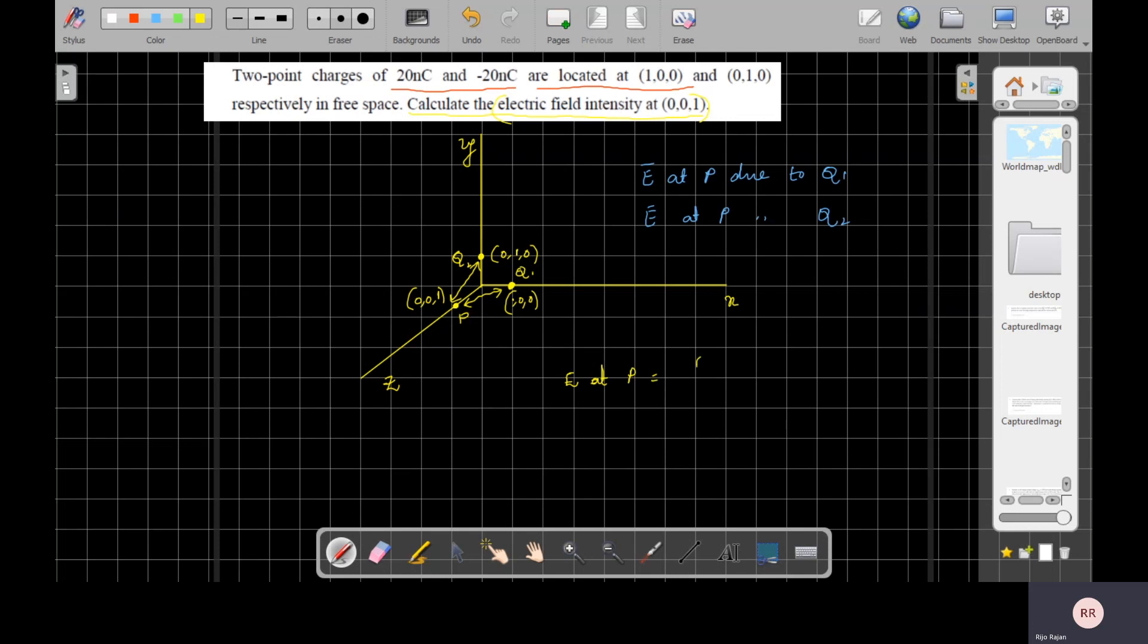E at P equals Q1 divided by 4π epsilon naught R1P squared. I am taking Q1 as the charge, P is the point, R1P squared, and we need to take into account the direction of that field, so that direction is A1P.